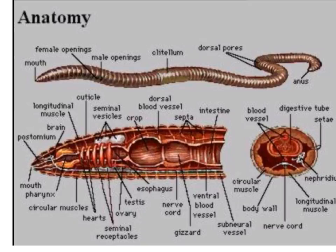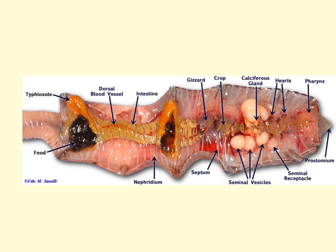Below the epidermis is a layer of circular muscles, and then there is a thick layer below that of the longitudinal muscles. These two layers of muscles act to extend and contract the body for locomotion. And there you have the anatomy of the common earthworm.